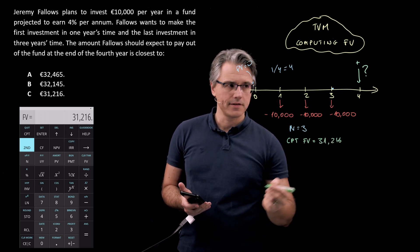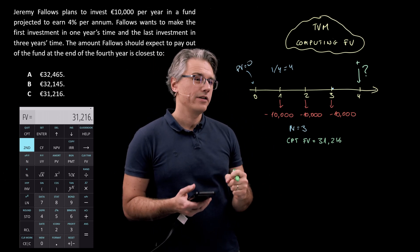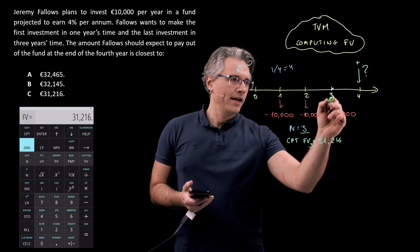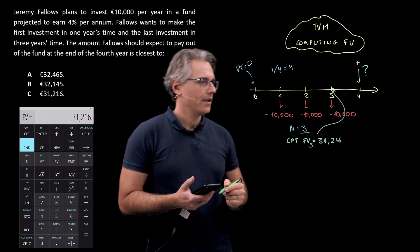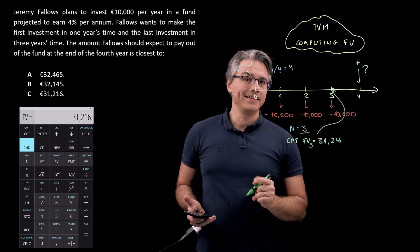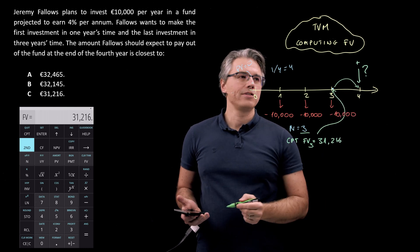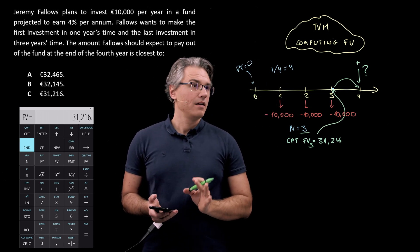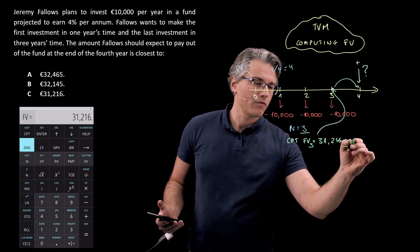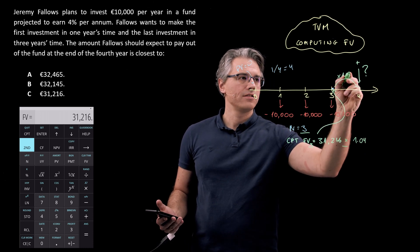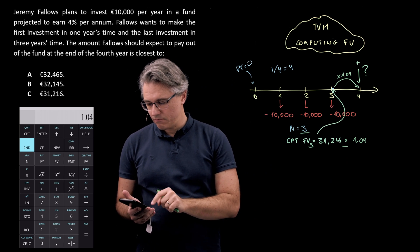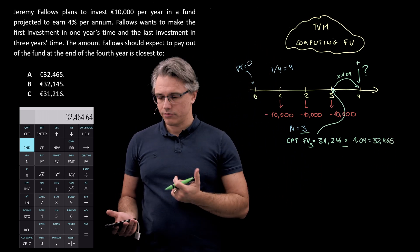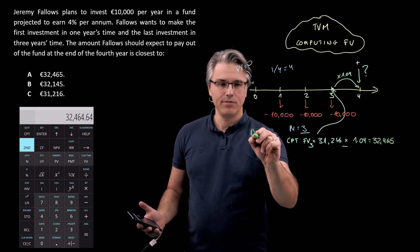The important thing to realize is because we've provided an input for n equal to three, the FV being displayed here is the FV at the end of year three. However the question asks for the FV at the end of the fourth year so we'll need to roll this forward just by one period using the same interest rate, four percent. So I'm going to take this and multiply by 1.04, times 1.04 equals 32,465 and this naturally is compatible with answer A to the problem.